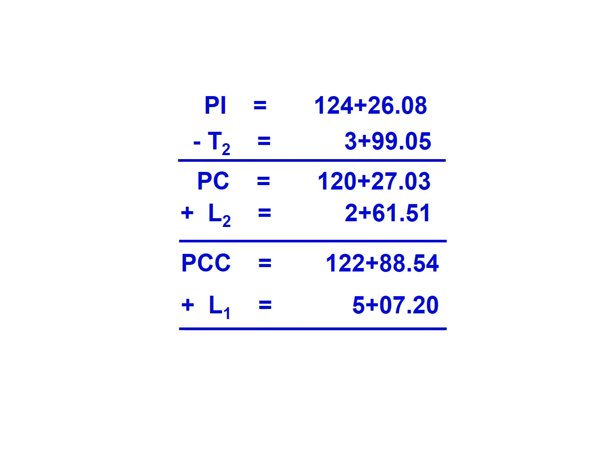Finally, we're going to add L1, which has a length of 5 plus 07.20, giving us our PT station of 127 plus 95.74. This shows what we were asked for in the problem: the station of the PC, the PCC, and the PT.